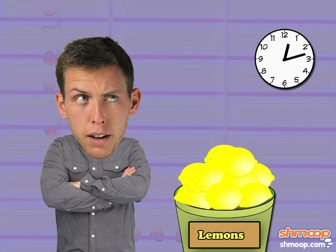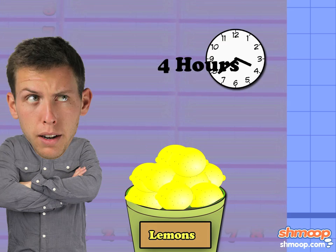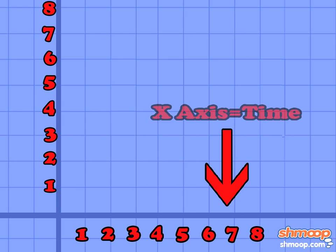First we want to know which two values our line represents. Since the money Marvin earns depends on the number of hours that pass, we know that time will be on our x-axis.